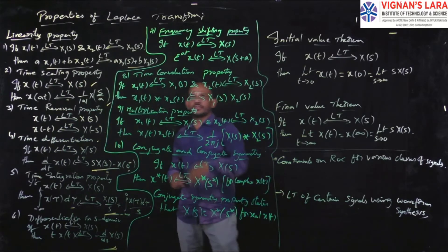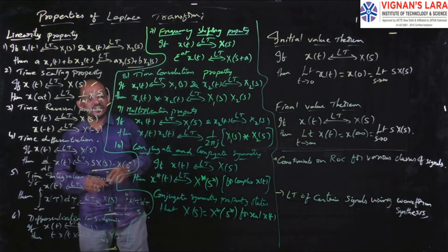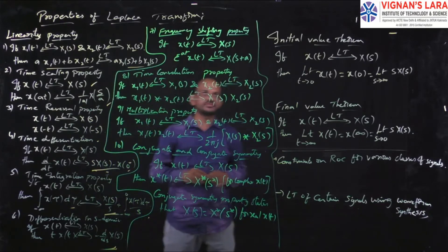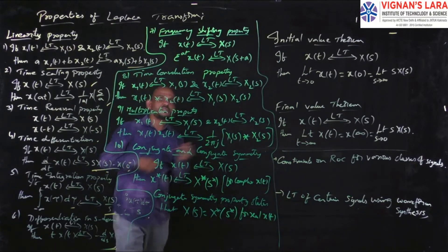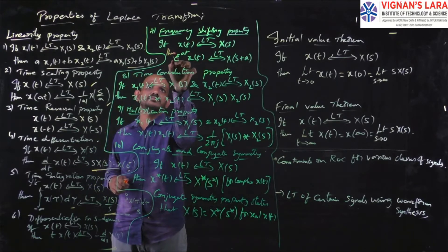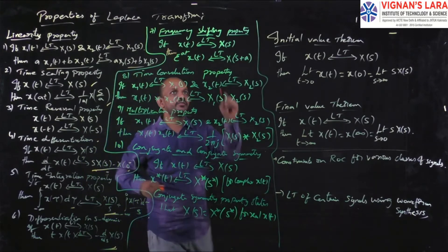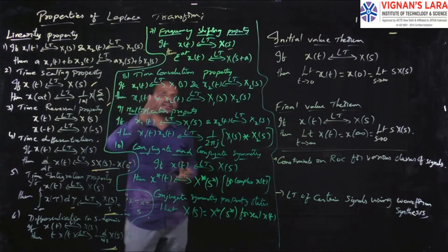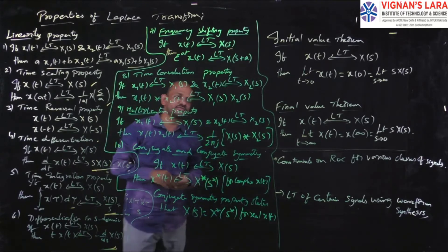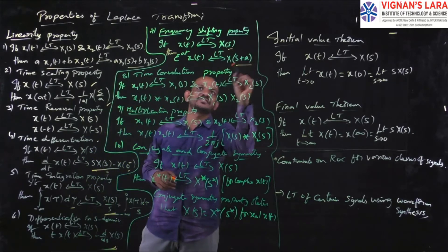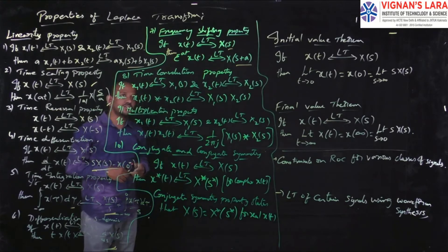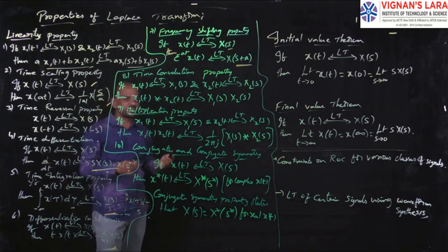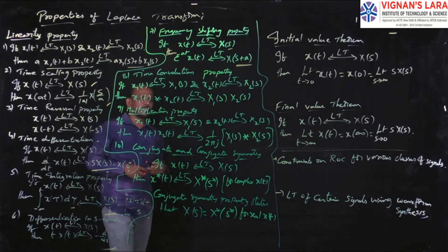Next is the frequency shifting property. If x(t) has Laplace transform X(s), then e^(−at)·x(t) will have Laplace transform X(s+a). That is the frequency shifting property. I already did some problems regarding this one.